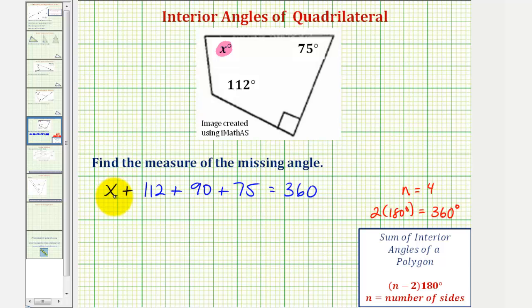Notice how we're leaving the degrees off in the equation, since our variable X already has a degree symbol. So now we have X plus 112, plus 90, plus 75, is equal to 277. So we have X plus 277, equals 360.